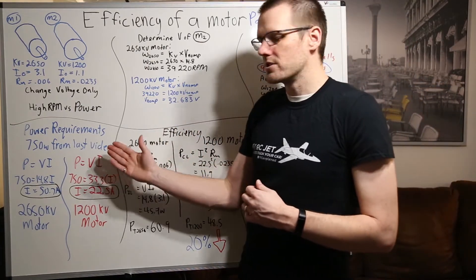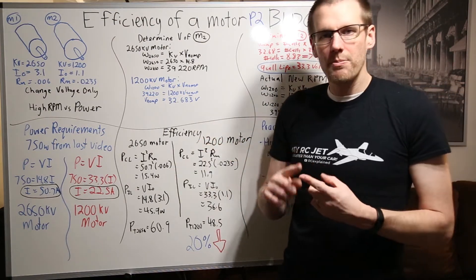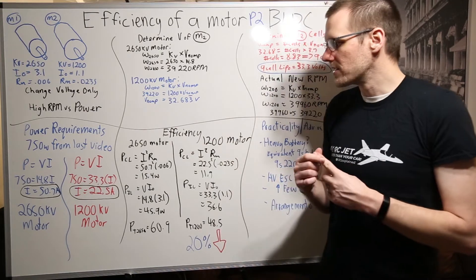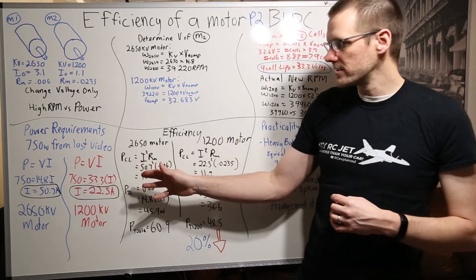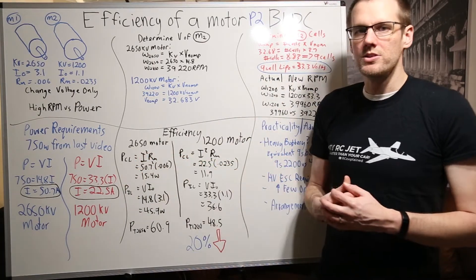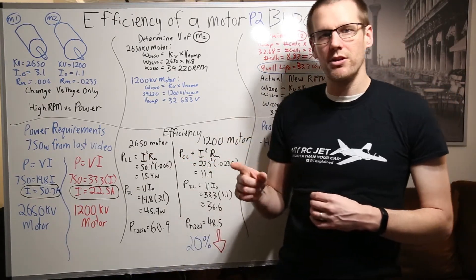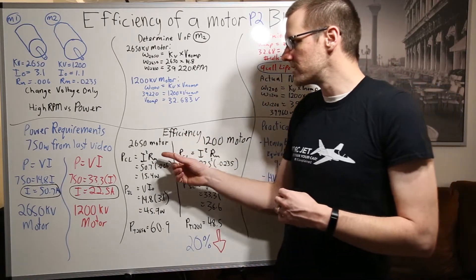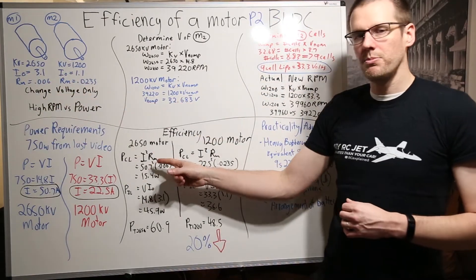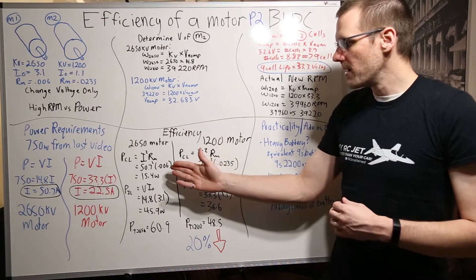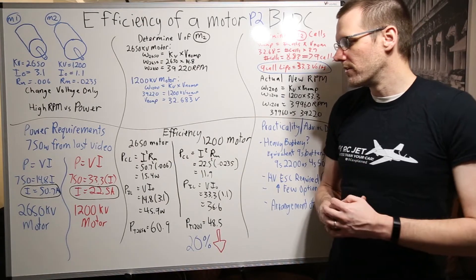Then what we want to do is determine the efficiency of both of these setups. We go through that by determining our copper losses just like we talked about last video as well as our iron losses that we also talked about in the last video. We then set the formula for our copper losses first. It's equal to I squared RM. This is just a power formula. Now where we're getting the losses is the current that is running and traveling through the windings multiplied by the resistance of those windings which we have in the specification up here in blue. We take our 50.7 we square that and then we multiply by .006. The output of this is going to be equal to 15.4 watts.